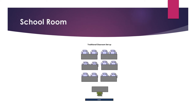Then we have the school room or classroom style, which is similar to a typical classroom. There is one head table where the teacher or faculty sits, and facing the head table there are desks — which can be in round or rectangular form — with chairs behind them for students to sit and listen to the faculty or professor.